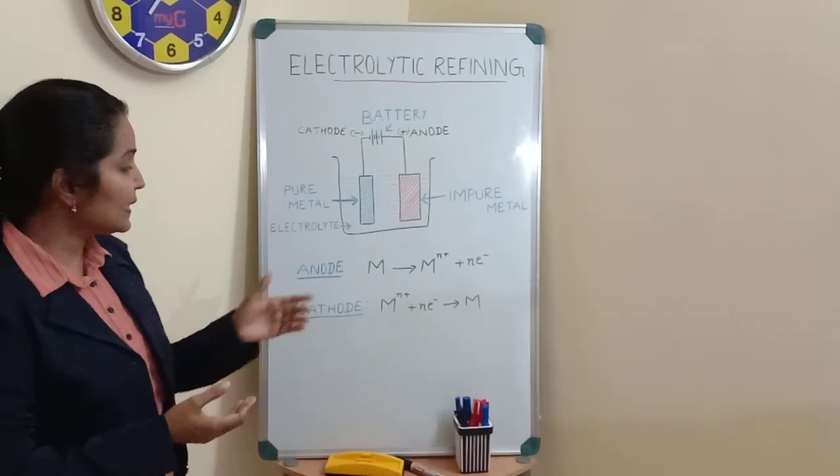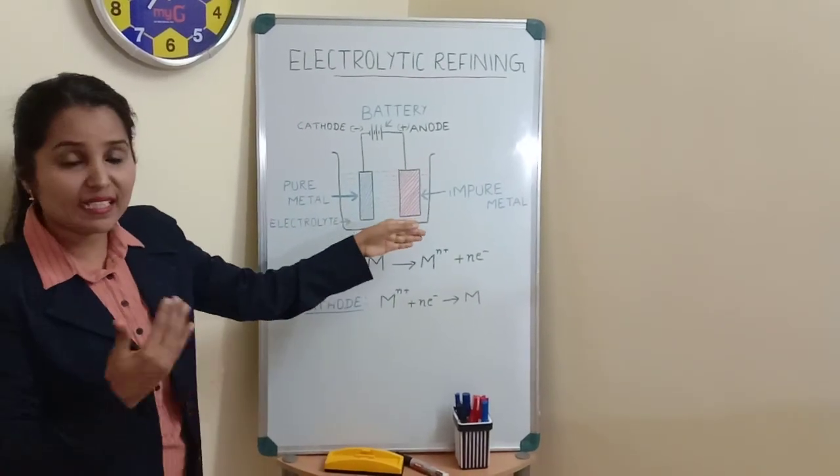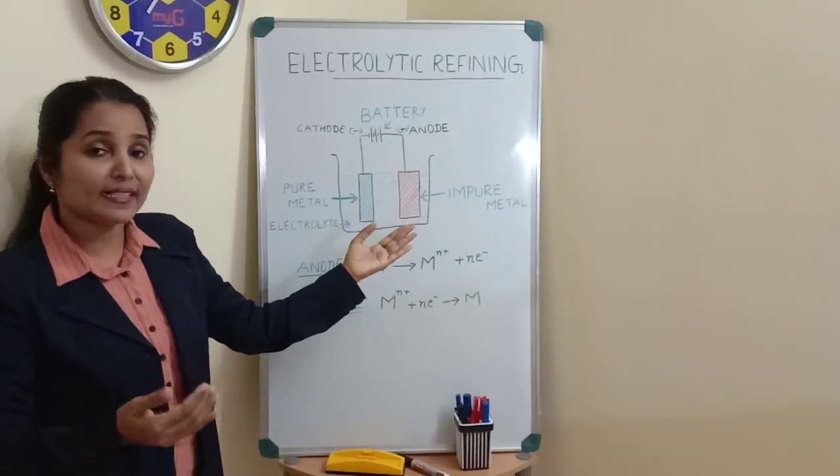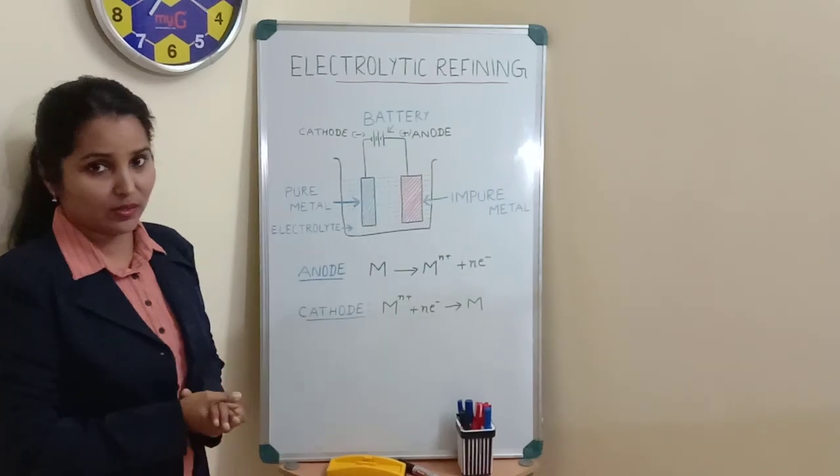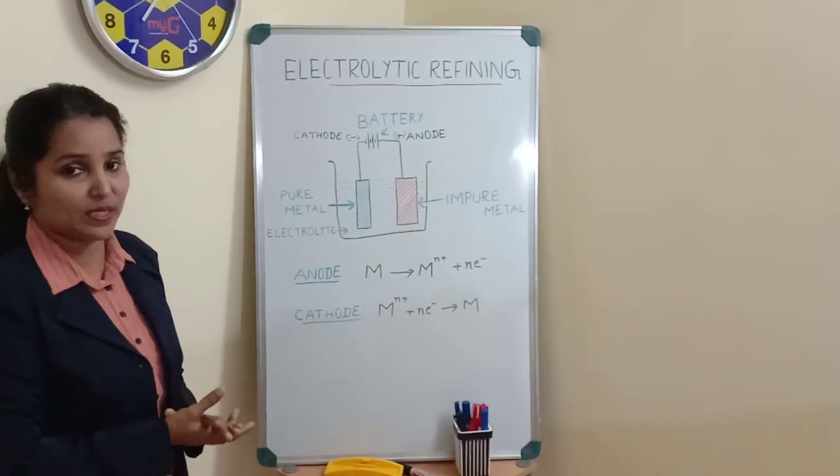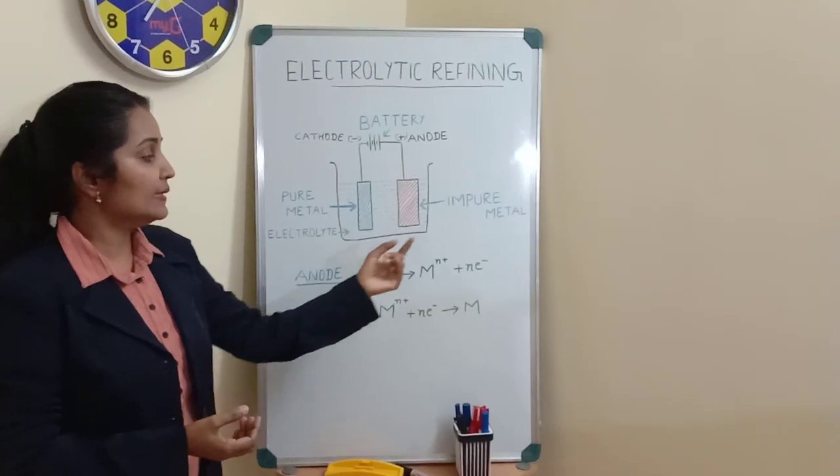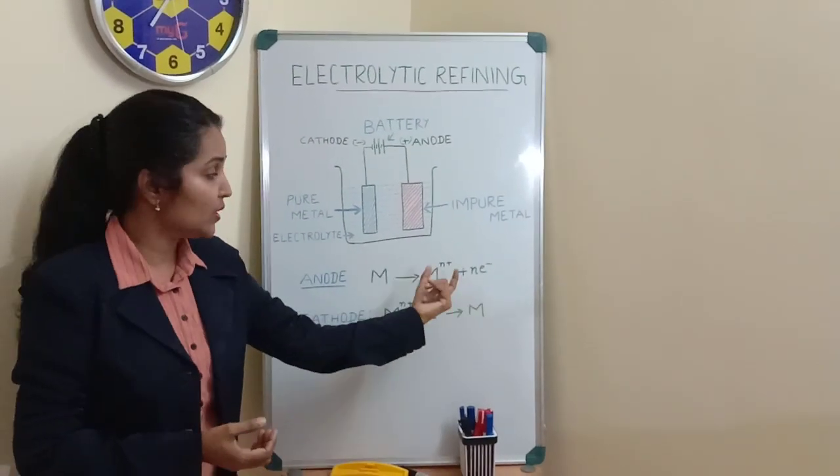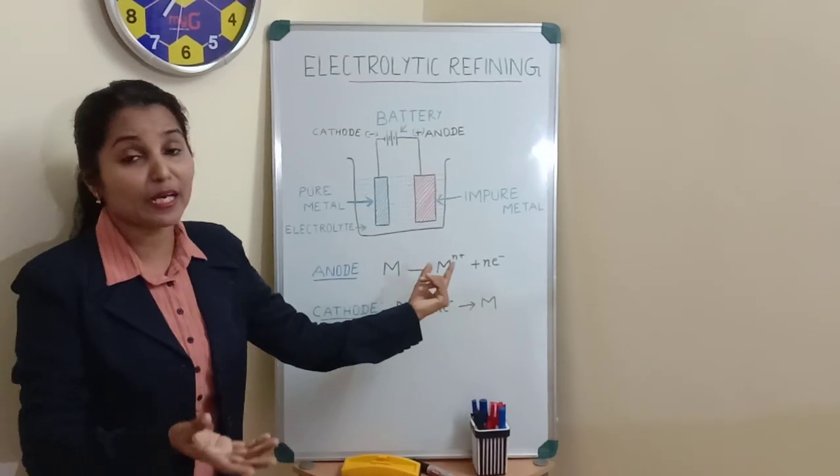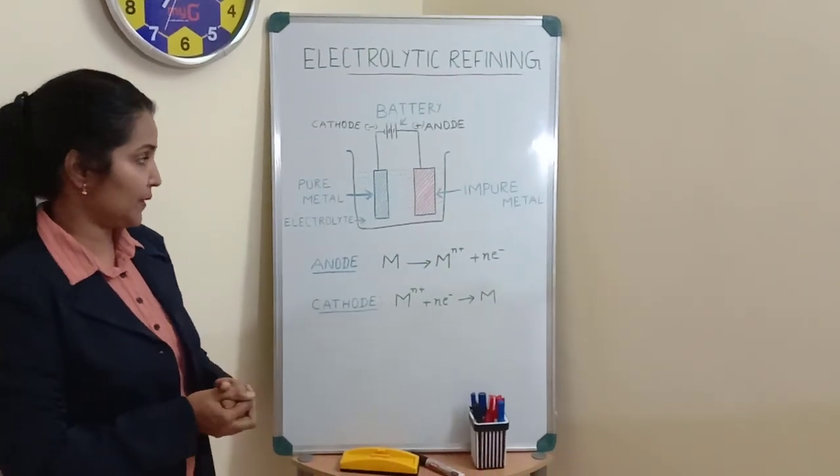Now here at anode, oxidation takes place. Any element that undergoes oxidation will lose electrons. When we write it as a general equation, the metal releases n number of electrons to form a positively charged ion with n number of positive charges.